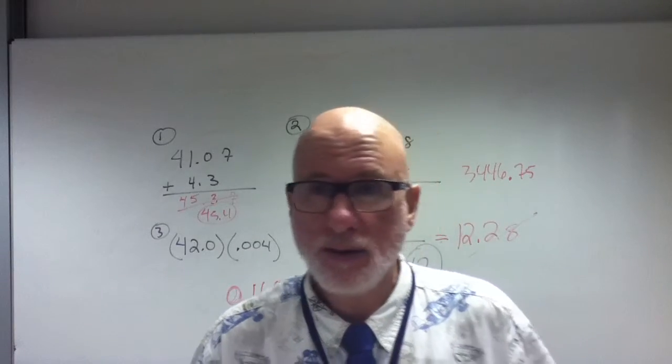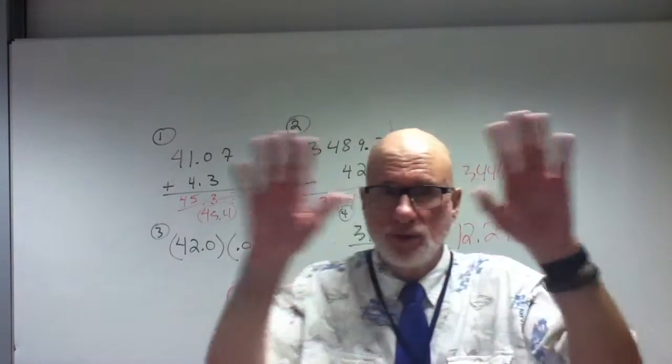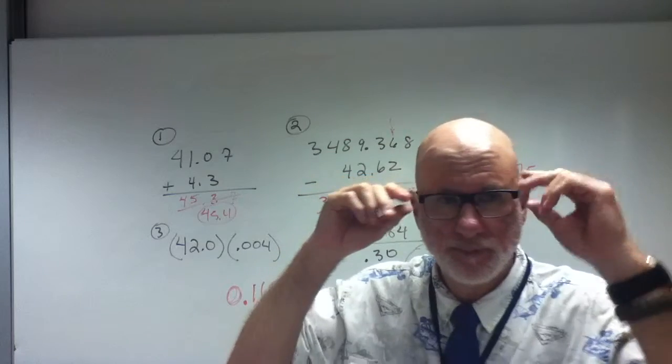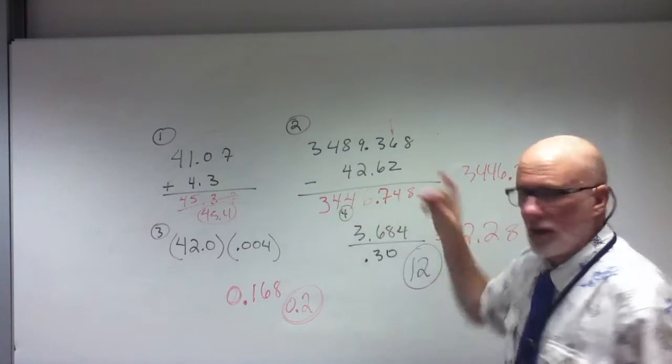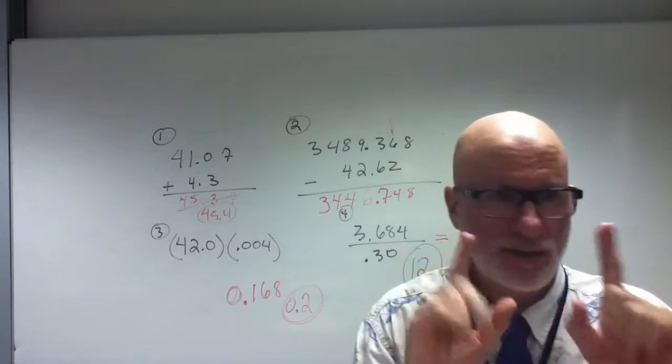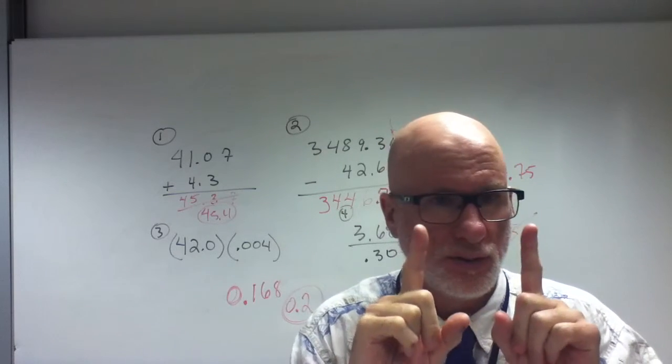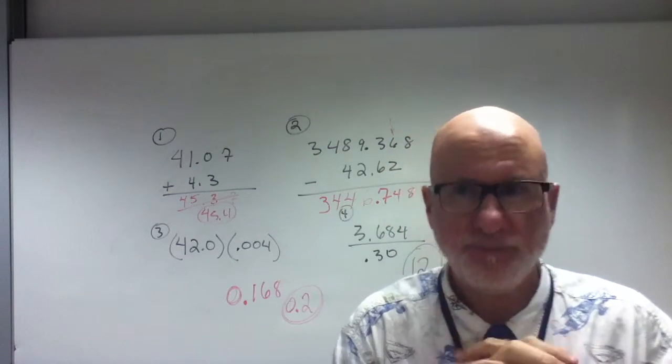In number two, 42.62 has four significant. No, no. In addition and subtraction, you look at decimal places yet.